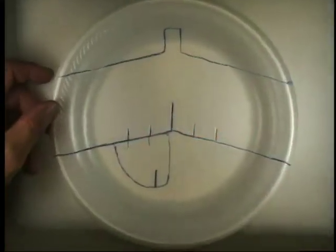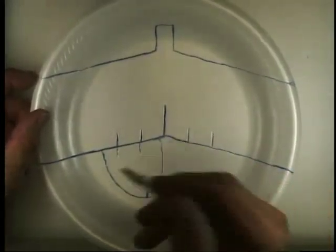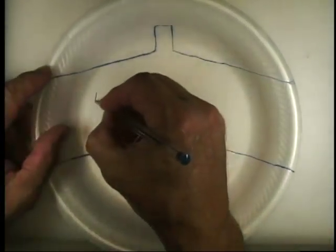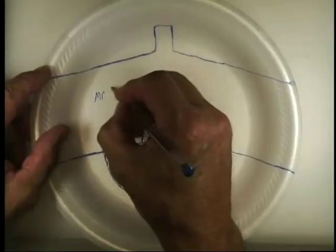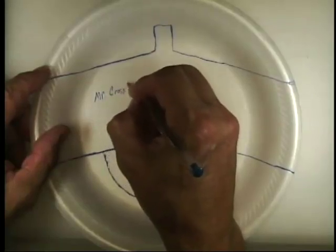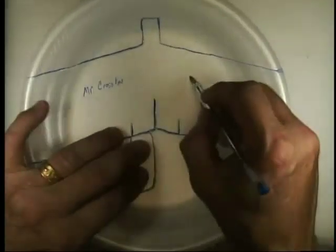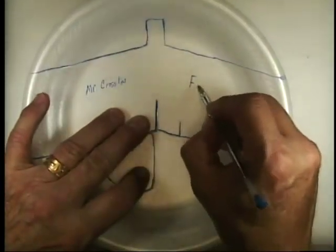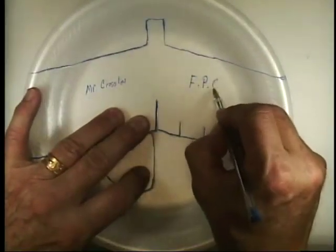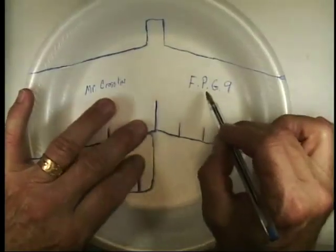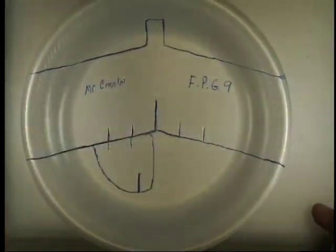It's time to add some markings on this, so take your pencil or your ink pen and write your name right here. Your name on one side and then the letters F, P, G, 9 for foam plate glider 9 inch on that side.